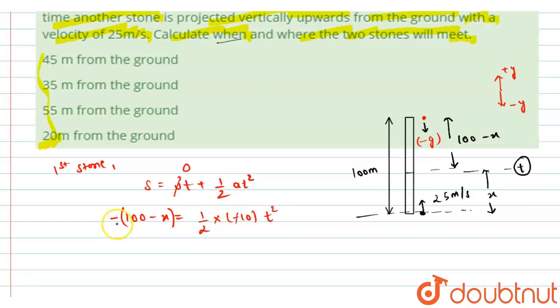So here we can cancel out the negative sign and this value of g equals to 10 can be cut out by 2, so we will get 100 minus x equals to 5 t square, so let this be equation number one.